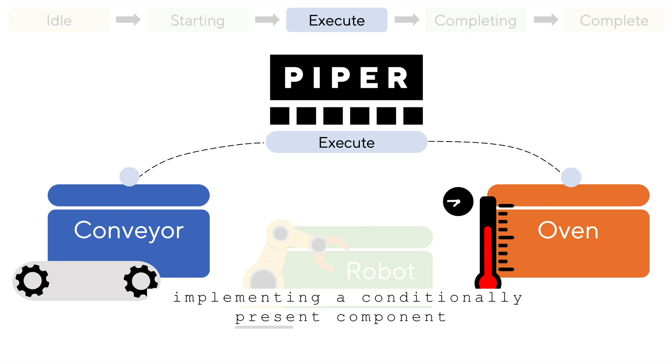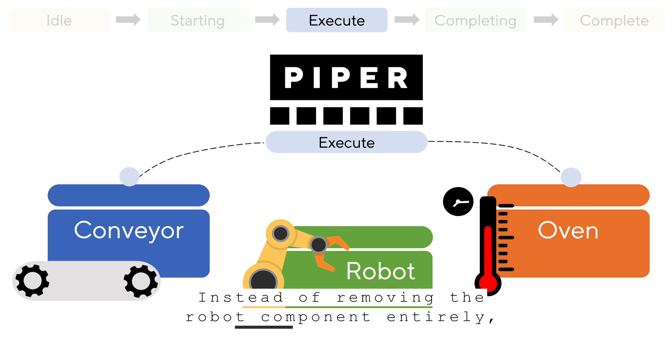Instead of removing the robot component entirely, you can simply add logic that only registers with Piper if that component is configured on this particular machine. The registration can happen in any state, and Piper is publishing the active state cyclically, so the newly registered component will start running its logic immediately after receiving the next broadcast. Note that an equivalent option here is to always register a component and use the conditional logic to report done so long as that component is disabled.